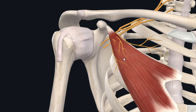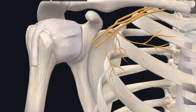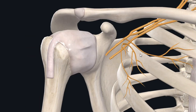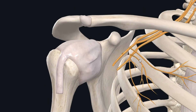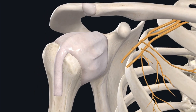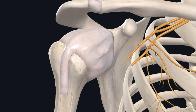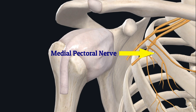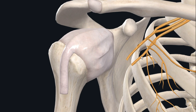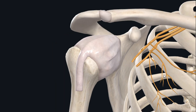The medial pectoral nerve underlies this muscle, so removing it allows us to see the nerve clearly. Here is the medial pectoral nerve originating from the medial cord of the brachial plexus, which then gives off pectoral branches to the pectoralis minor muscle.